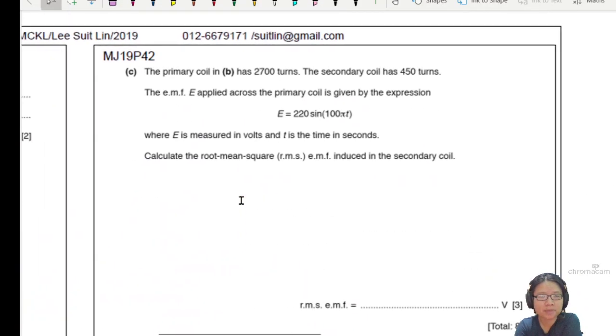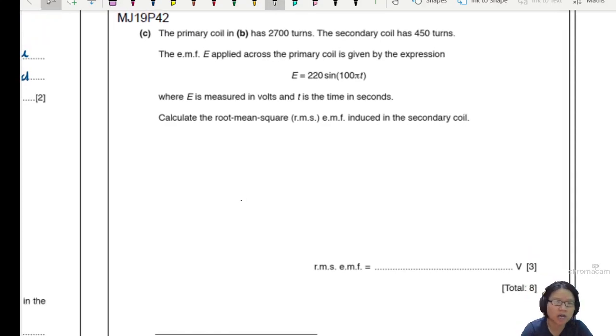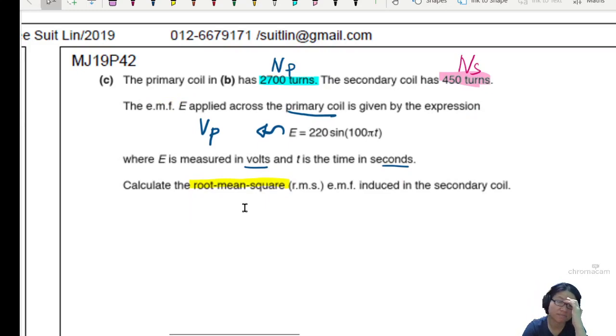I'm going to move on to the calculation part. Primary coil in B have 2700 turns. So this is NP, number of turns in P. I'm just going to highlight this. Secondary coil has 450 turns. So this one will be NS. EMF applied across the primary coil is given by this expression. So this one is the EMF, or we will call this the VIN or I guess we could call it VP, primary coil. E is measured in volts and T in seconds. Very good. Calculate the root mean square RMS EMF induced in the secondary coil.